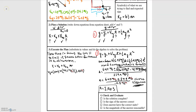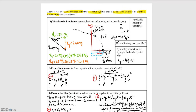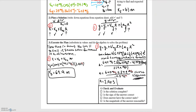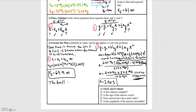Now that we've solved for the time the ball is in flight, we use the x-direction equation to solve for the final position. Substituting in those values, we find that the final position x-final equals 69.9 meters. So the ball lands 69.9 meters to the right of the cliff's base.